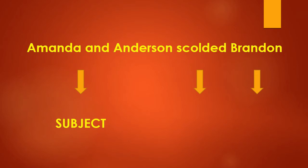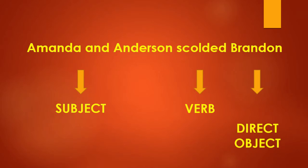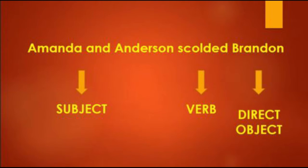Now let's check this sentence. Amanda and Anderson scolded Brandon. Amanda and Anderson is the subject. Scolded is the verb. Brandon is the direct object. Simple sentence pattern and this is correct.